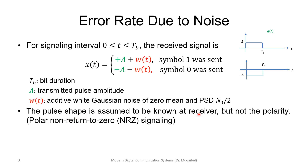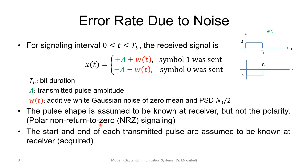The pulse shape is assumed to be known to the receiver, but not the polarity. The job of the receiver is to decide whether we are sending 1 or 0. We will assume we are using non-return-to-zero signaling — polar non-return-to-zero in this example. The start and end of each pulse transmitted is also assumed to be known; we have perfect synchronization, so the receiver knows where to start and where to end. Timing is acquired.